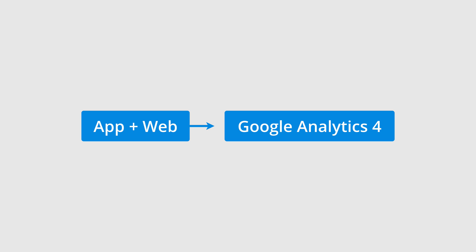Before we look at the steps to get started with a Google Analytics 4 property, I want to mention they were previously called App and Web properties. So if you've already created an App and Web property, then you don't need to set up another property in Google Analytics. Since App and Web properties are now Google Analytics 4 properties, there's no difference. However, there are differences between Google Analytics 4 and Universal Analytics properties.